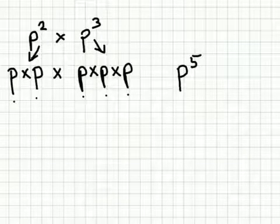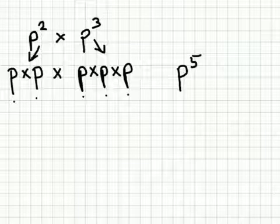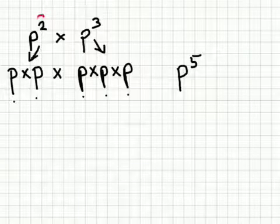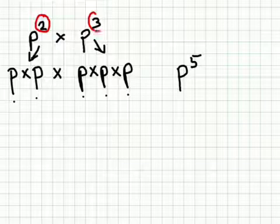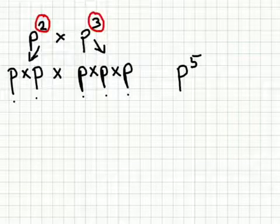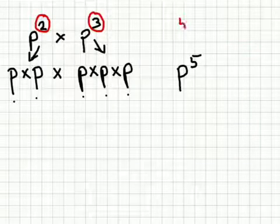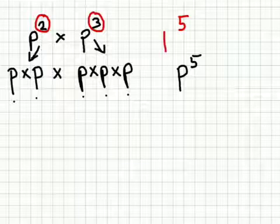Now we don't want to always be writing out a big long list of letters, so the easy way to do this is just to have a look at the powers. For this power here, 2, and this power here, 3, I add them together, I get 5. So the answer is p to the power 5.